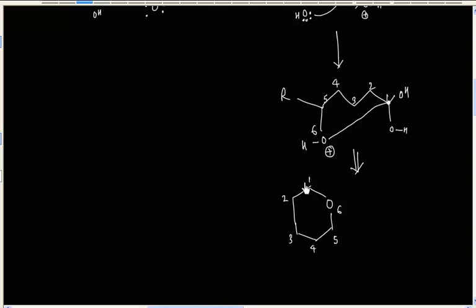So carbon number one has two OH groups. And carbon number five has alkyl group. Carbon number six has oxygen and hydrogen.